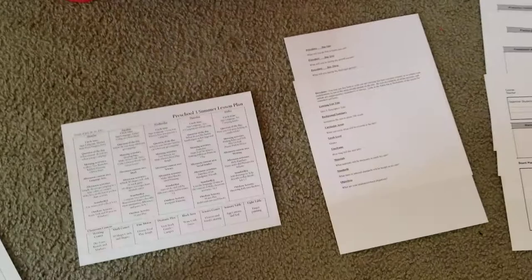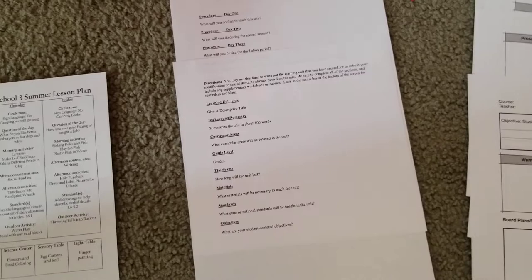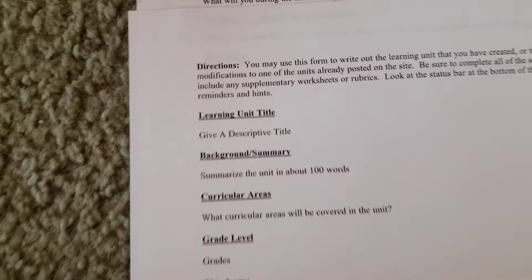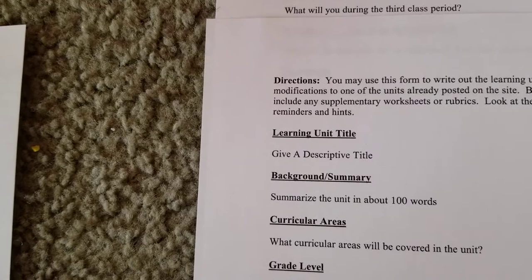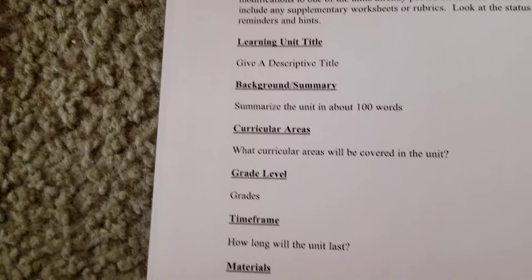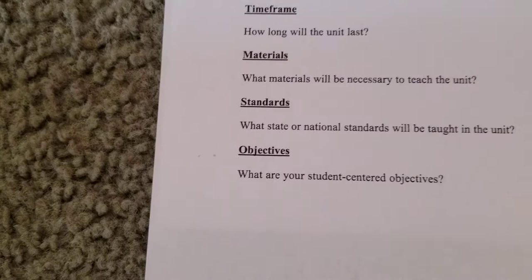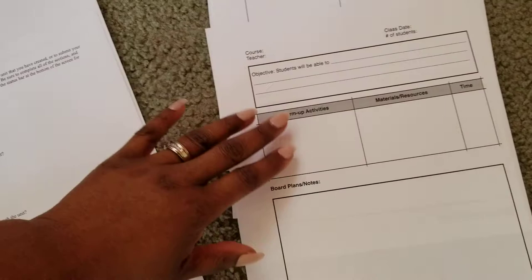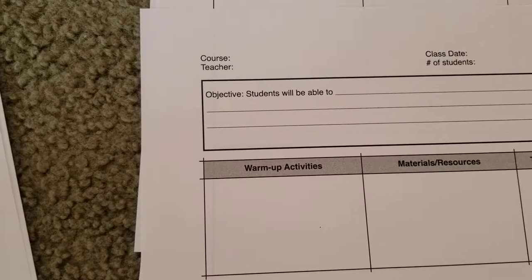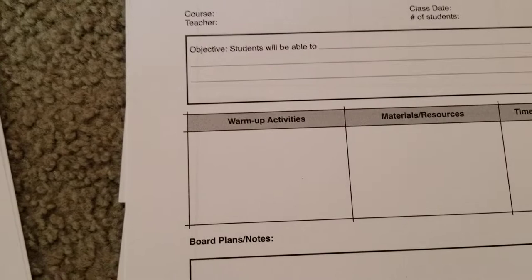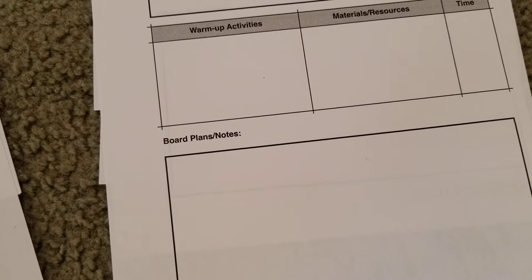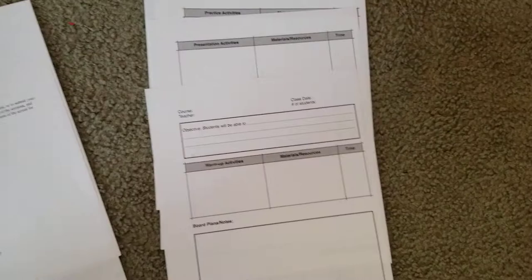You can make your plans as elaborate as you want to or as simple as you want to — it's totally up to you. Here's one where you can write it out: learning unit title, give a descriptive title, background summary, summarize the unit in about 100 words. You can have something with an objective — the students will be able to — plus warm-up activities, materials, resources, time, and board plans. You can make these things as elaborate or as simple as you like.